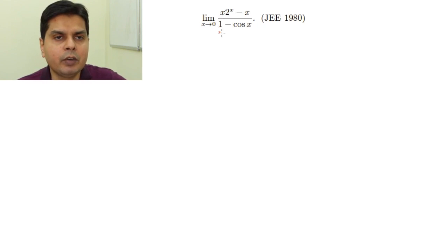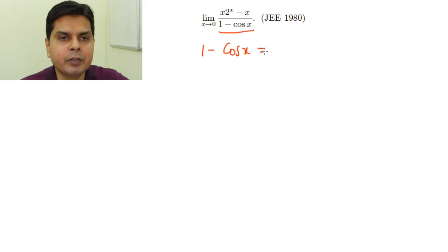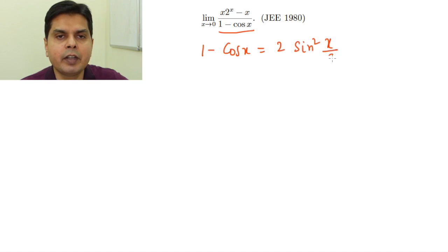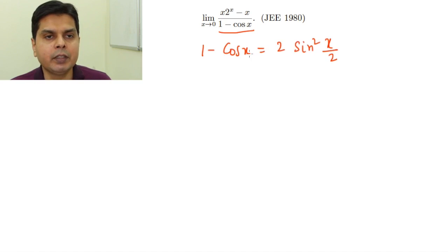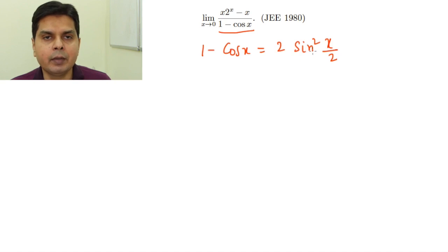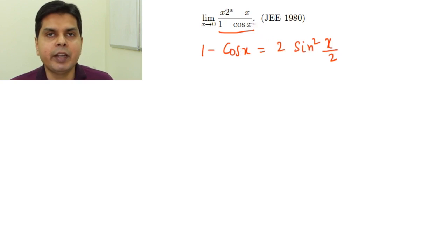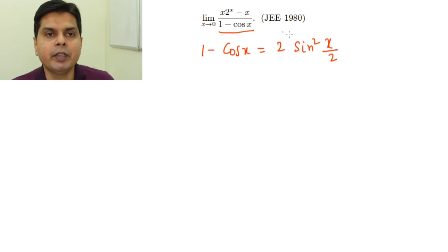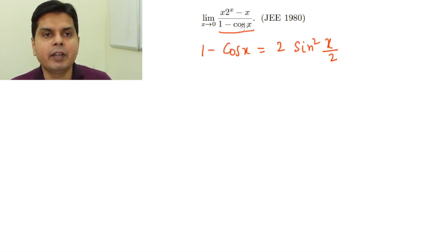First of all, look at what is given in the denominator — we have 1 minus cos x. I can write 1 minus cos x as 2 sin²(x/2). I am changing this into a sine term because there is a very neat formula for sin(x)/x as the limit x tends to 0, and there is also an x term in the numerator, so I can use sin(x/2) and x to arrive at the result.